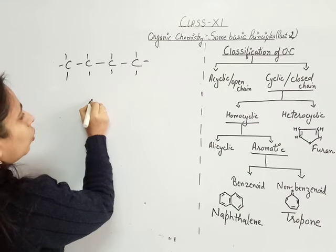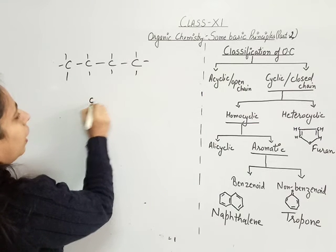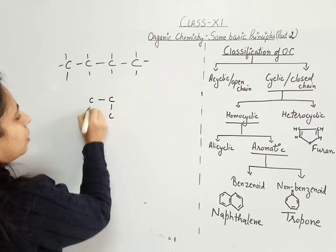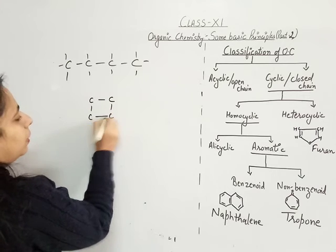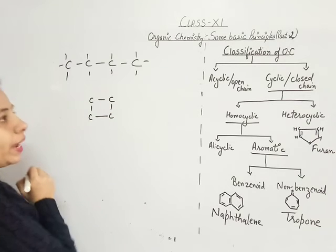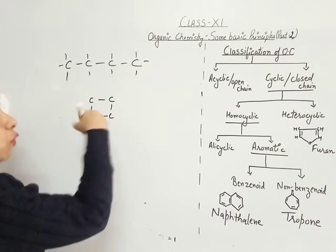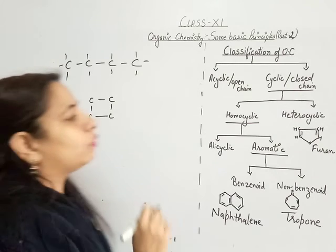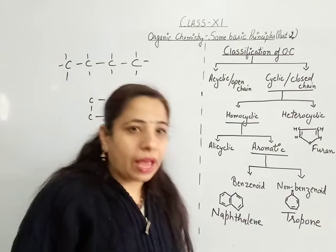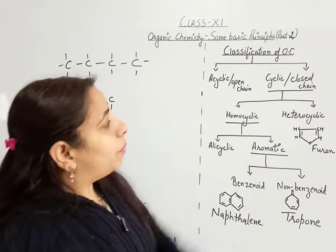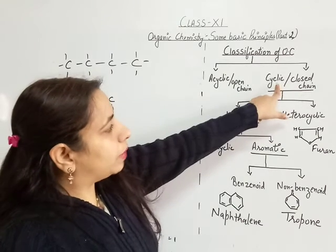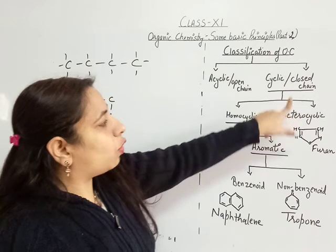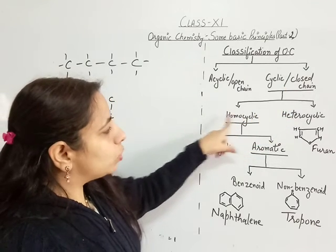If we want to make a closed version of the same, we close the chain to form a ring. So it becomes a cyclic form — the same four carbon atoms, but now arranged as a cycle. This closed chain or cyclic form is further of two types.